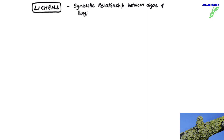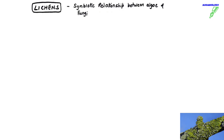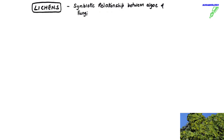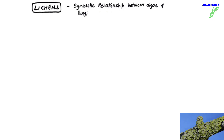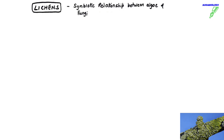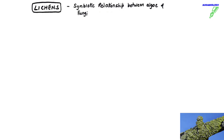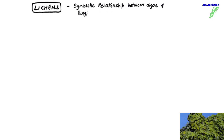In this video we are going to discuss about lichens. The word lichens means a symbiotic relationship between algae and fungi. A symbiotic relationship is one where two organisms live together and both of them get benefited from each other. So lichens is produced by the marriage of algae and fungi.